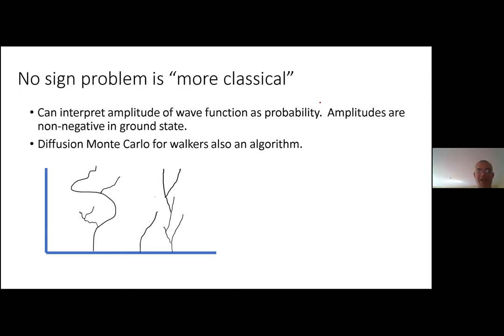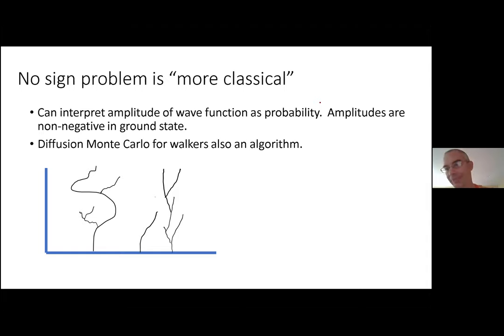In a sense, Hamiltonians with no sign problem are more classical than typical quantum problems. This path integral Monte Carlo is a very important tool in condensed matter and high energy physics, though it's not available for all systems. There's also diffusion Monte Carlo, another algorithm for systems with no sign problem. It's based on interpreting the amplitude of the wave function ψ(x) — rather than |ψ(x)|² — as a probability.